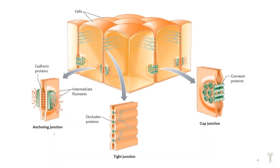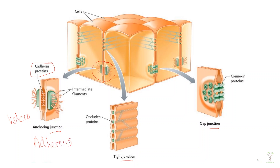There are three major types of junctions — ways that cells can be connected to each other. The first is anchoring junctions. Anchoring junctions are composed of many kinds of proteins, but one major type found in many tissues is called cadherin proteins. These hold cells together tightly, kind of like velcro. In tissues where there is a lot of movement and cells need to stay connected, there will be a lot of anchoring junctions, sometimes called adherens junctions.